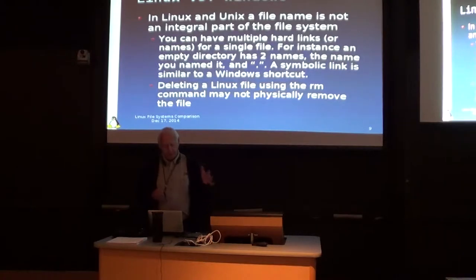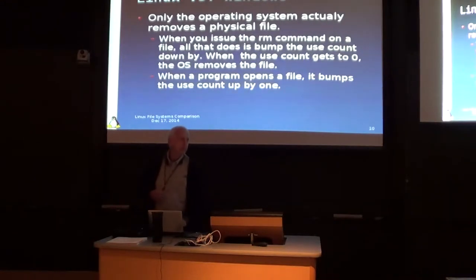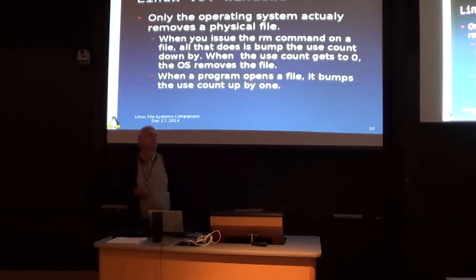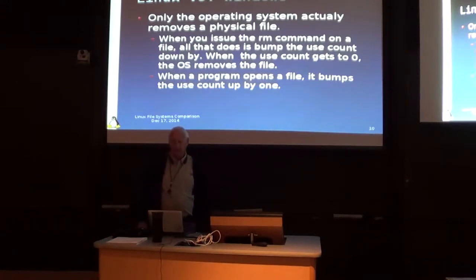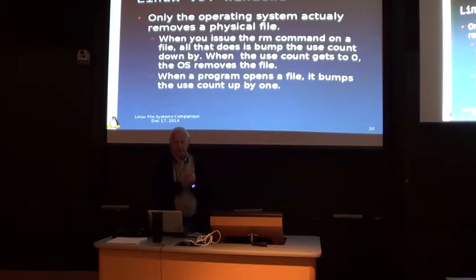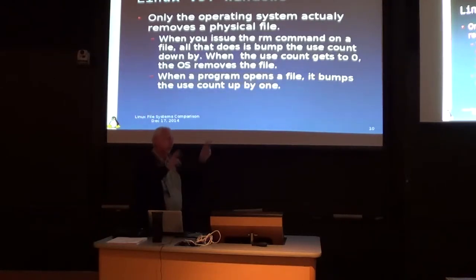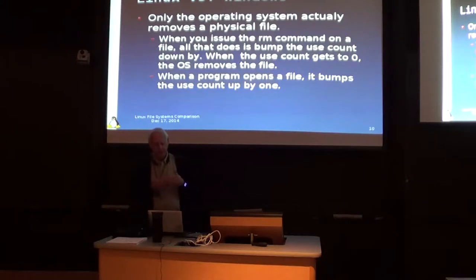Deleting a file using the rm command may not physically remove the file, because if the file is in use it's not going to get deleted. When you issue the remove command on a file, it decrements what I call the use count — in the inode it's actually called the link count. When the link count gets down to zero, the OS will physically remove the file. So you can have multiple instances of the same file. Only the operating system actually removes the physical file.